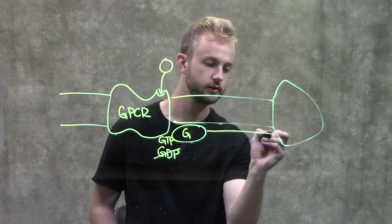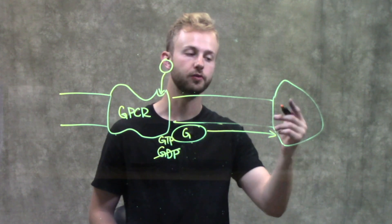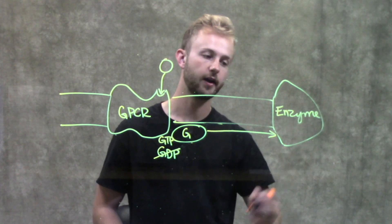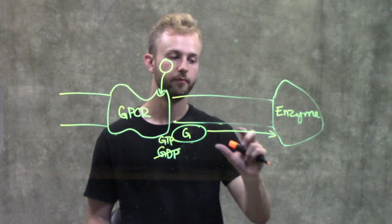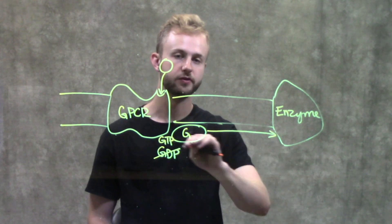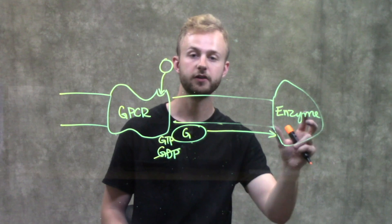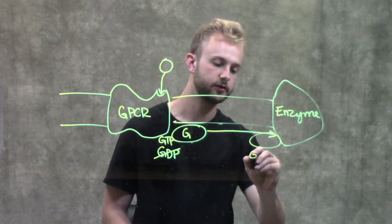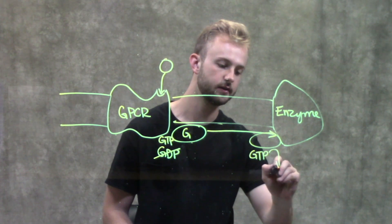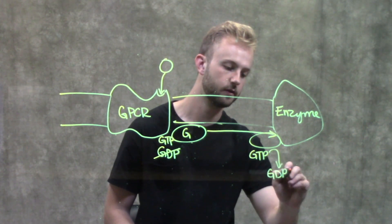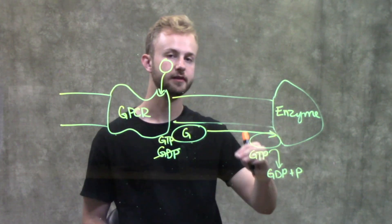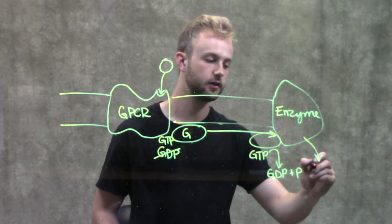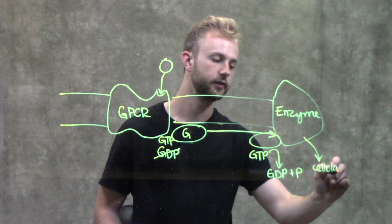Once it has this GTP and it's activated, it's going to diffuse along the membrane until it gets to an enzyme. This enzyme could be a variety of different enzymes, but either way, the G-protein will diffuse over and come into contact with it. When the G-protein gets there, it's going to hydrolyze its GTP to a GDP plus a phosphate, and as it does that, it's going to activate this enzyme. Now this enzyme can go on to cause a cellular response.